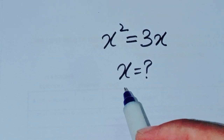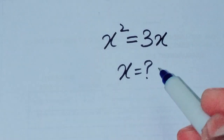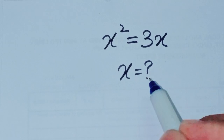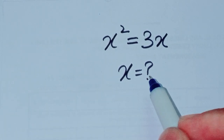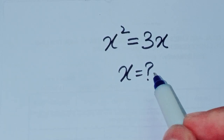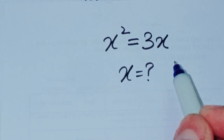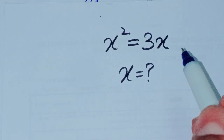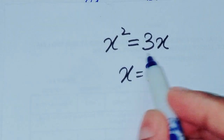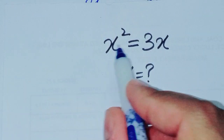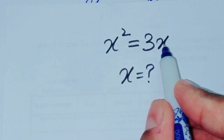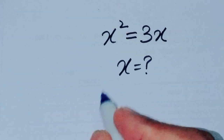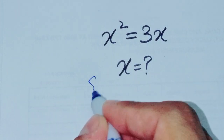Assalamu alaikum everyone. Today we will solve a question which is actually very easy, but a lot of students make mistakes on it. The question is: x squared is equal to 3x.